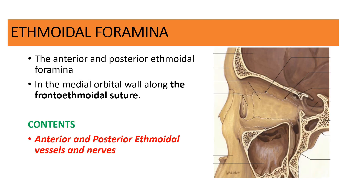The ethmoidal foramina are located along the frontoethmoidal suture — the suture connecting the frontal bone and the ethmoid bone. Along this suture there are two openings: the anterior ethmoidal foramen and the posterior ethmoidal foramen. These carry the anterior and posterior ethmoidal groups of vessels and nerves.